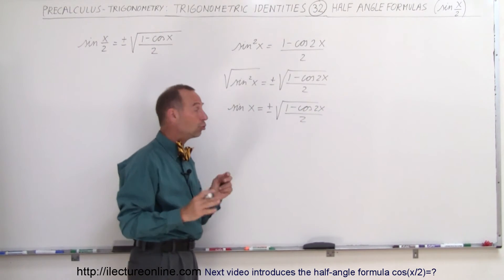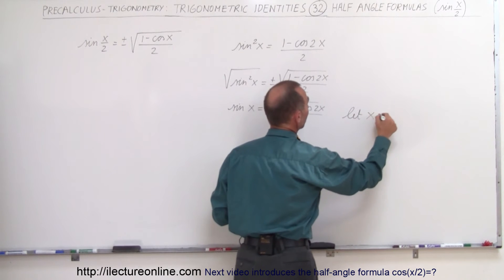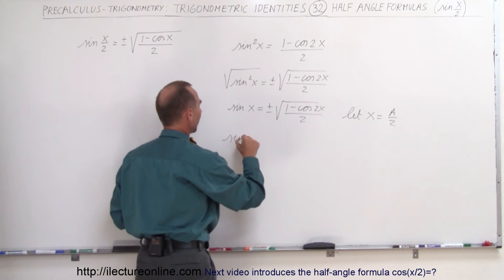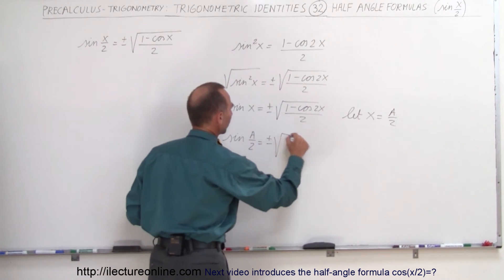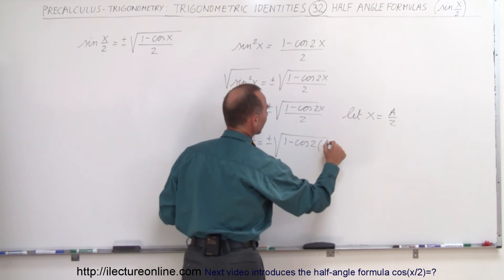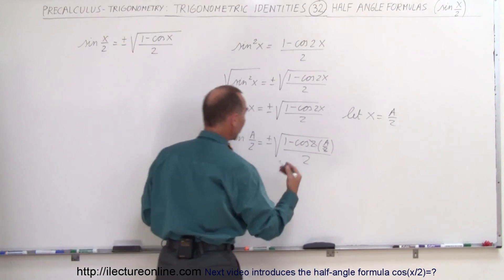Now if we make a substitution, if we say let x equal a divided by 2, if we do that we get the sine of a divided by 2 is equal to plus or minus the square root of 1 minus the cosine of 2 times a divided by 2, all divided by 2. And of course this cancels out.